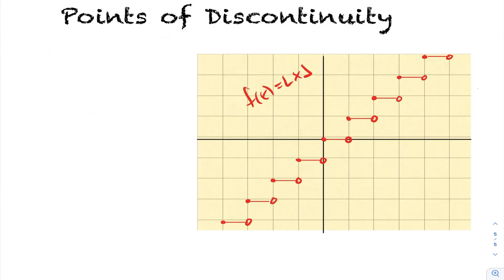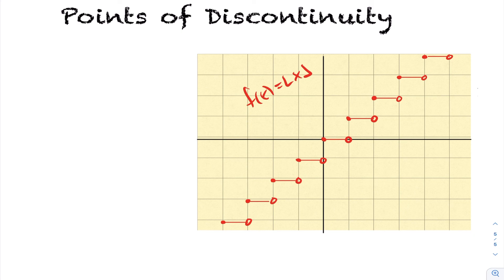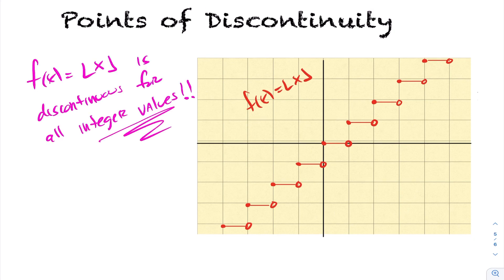Looking at the graph of the floor function, we can see many points of discontinuity — breaks in the graph. A function is continuous if it's continuous at every point in its domain, but here we have breaks occurring at every integer value. So the points of discontinuity of the floor function are at every integer value. That concludes today's lesson on the floor function.